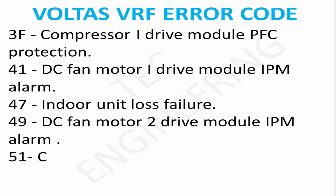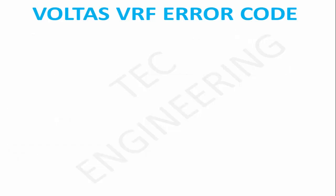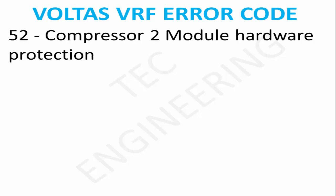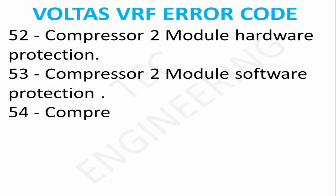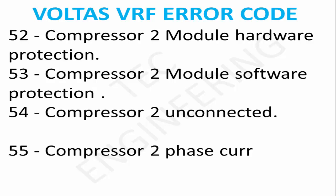41 DC Fan Motor 1 Drive Module IPM Alarm. 47 Indoor Unit Loss Failure. 49 DC Fan Motor 2 Drive Module IPM Alarm. 51 Compressor 2 Drive Module IPM Protection. 52 Compressor 2 Module Hardware Protection. 53 Compressor 2 Module Software Protection. 54 Compressor 2 Unconnected. 55 Compressor 2 Phase Current Overload Protection.